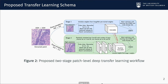We propose a two-stage deep transfer learning patch level classification method, which is not only able to extract the features from a larger field of view, but is also able to further extract the small details from high-resolution patches.